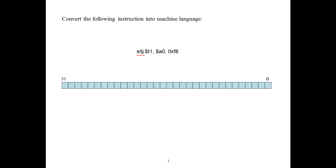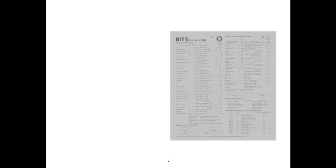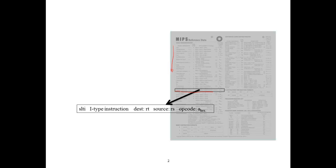So this instruction is a set if less than immediate. If we refer to the MIPS reference data sheet, we can scan down this column looking for the set if less than instruction. The data listed there includes what kind of instruction it is. So a set if less than immediate is an I-type instruction.